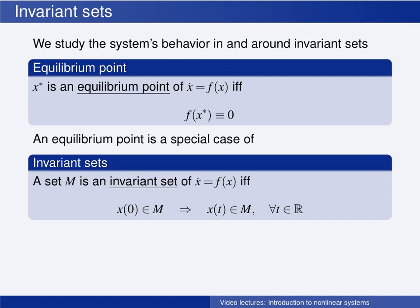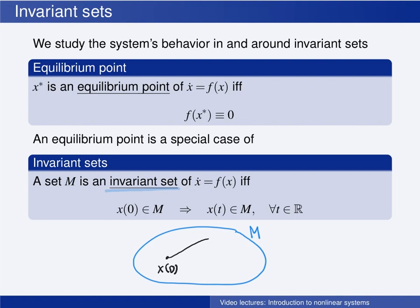An equilibrium point is a special case of the more general type of sets called invariant sets. We say that the set M is an invariant set of the system ẋ = f(x) if and only if, when the initial state lies in M, the state will stay in M for all time. So if x at time zero is in this set, the state will stay in the set for all time. The invariant set being a point is just a special case of this definition — the time derivative being zero means the state value will not change, and thus the state stays in this set of one single point for all future time.